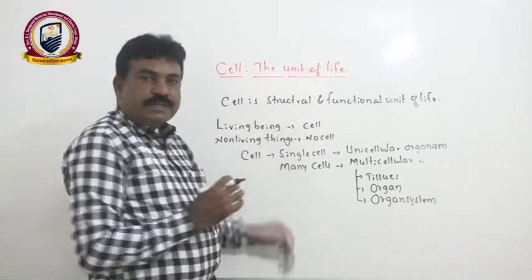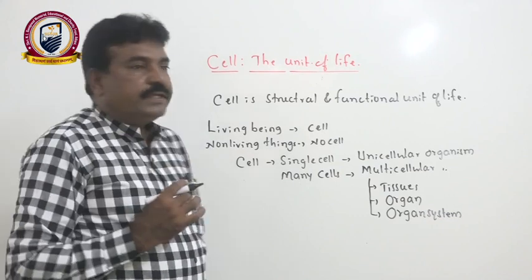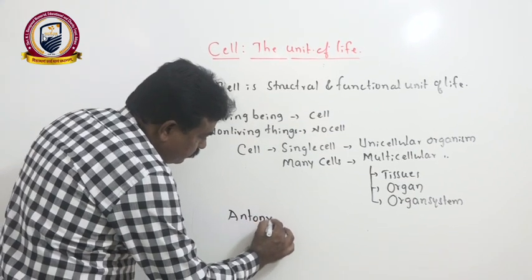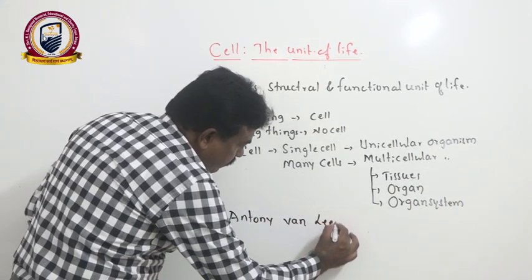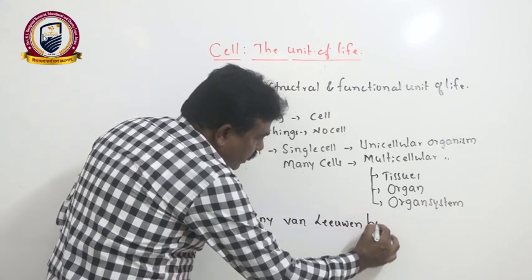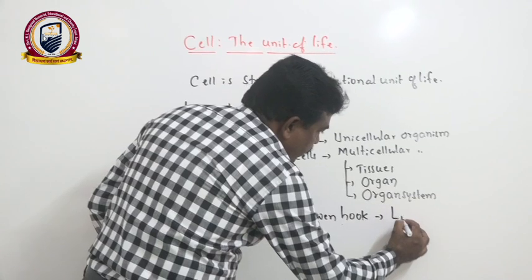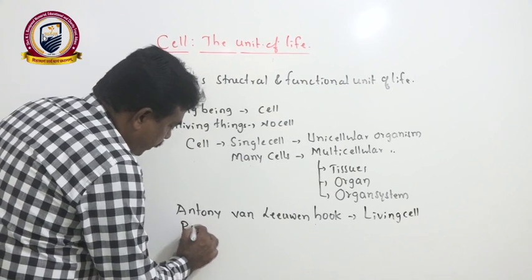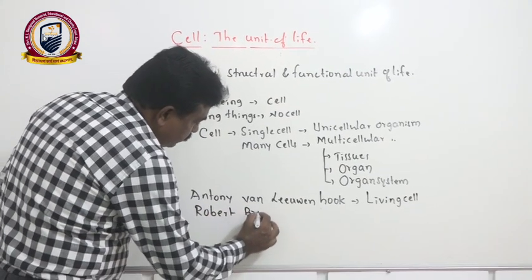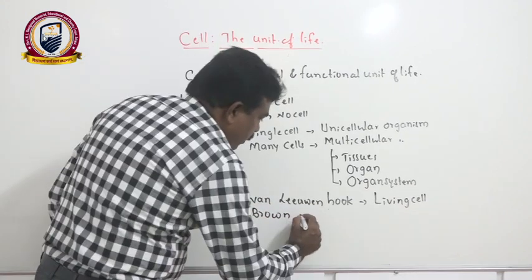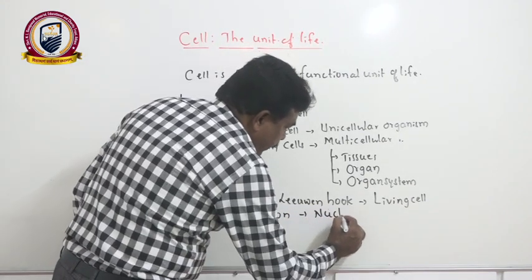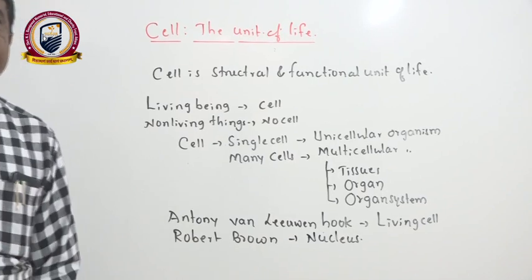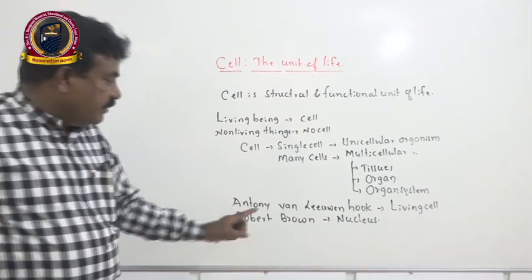There is a wonderful history with cell life. Antony van Leeuwenhoek first saw the living cell. Then the eminent cytologist Robert Brown identified the center of all living cells — a specialized master cell organ whose name is nucleus.